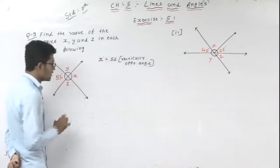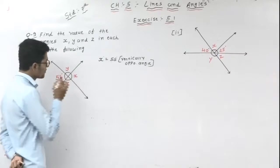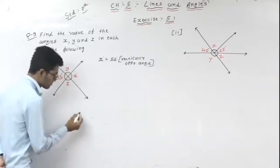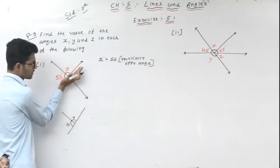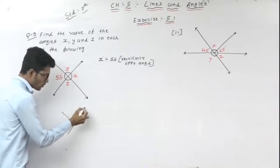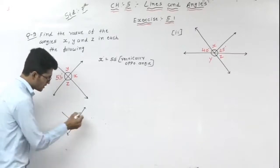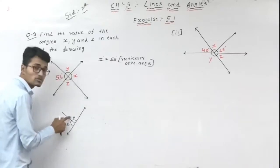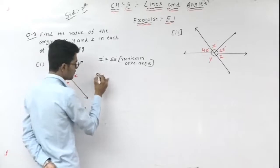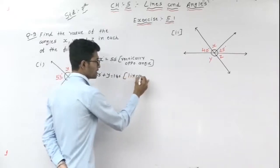Then after, we find Y and Z. If we find Y, then Z is straightforward. So first of all we find Y. I will draw one more figure. This angle is 55 and this angle is Y. This is one straight line divided into two parts — this means it is a linear pair. Linear pair: the sum of two angles is equal to 180 degrees. So 55 plus Y is equal to 180, because this is a linear pair.